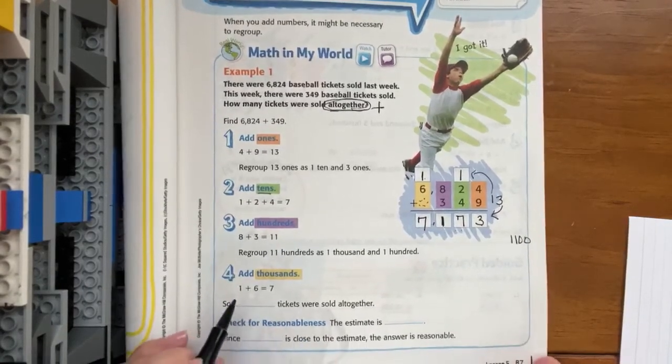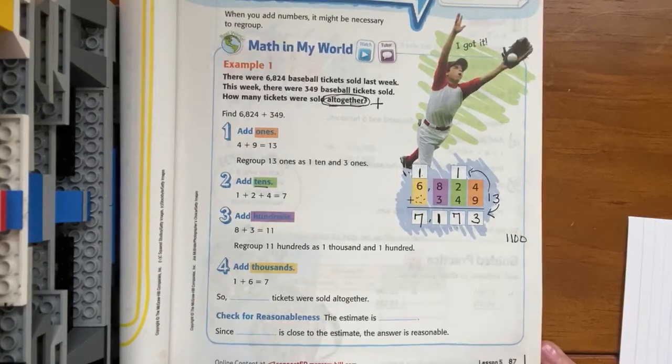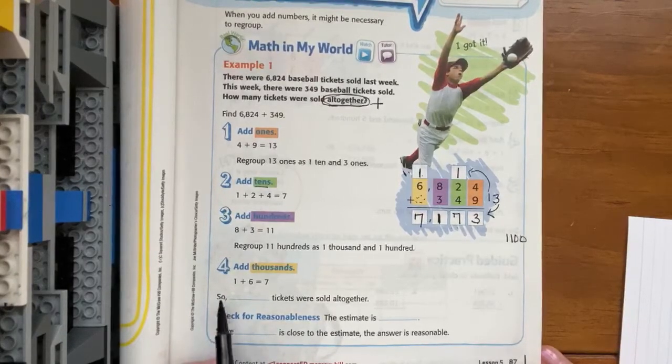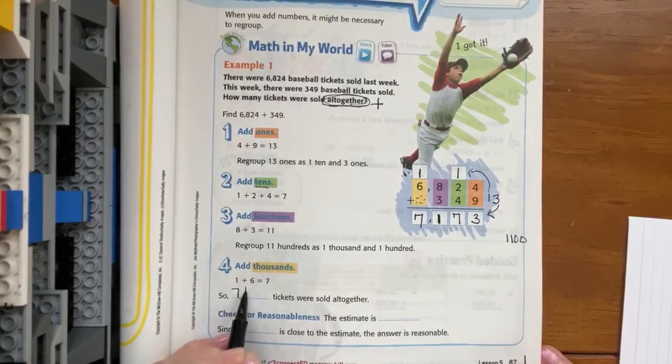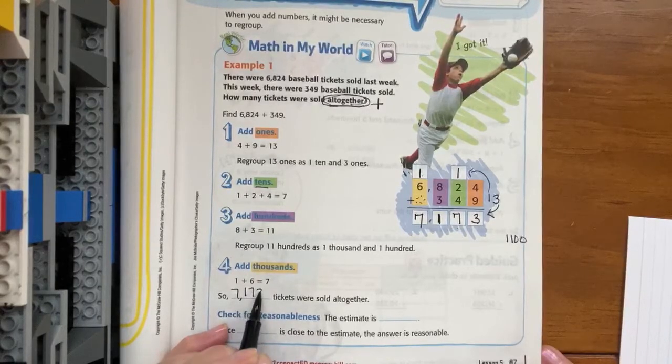So let's answer their question, because we have to be able to talk our math. So 7,173 tickets were sold altogether.